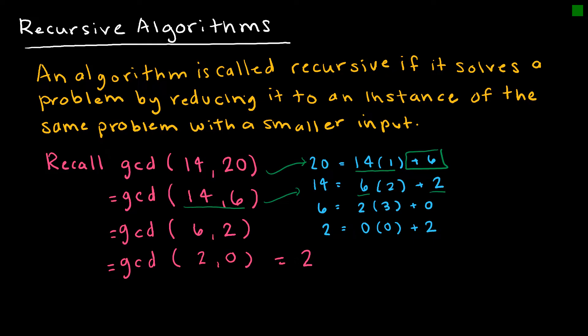That's equal to the GCD of 6 and 2. And then I do that again and get the GCD of 2 and 0. Therefore, my GCD is 2. We're going to look at the actual pseudocode for that in just a moment. But this is essentially the way a recursive algorithm works.